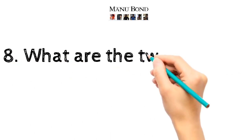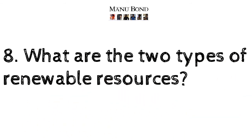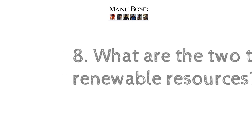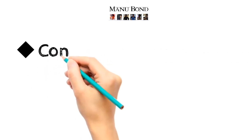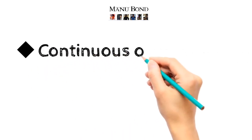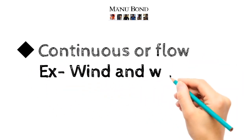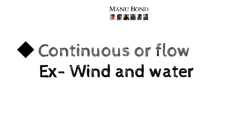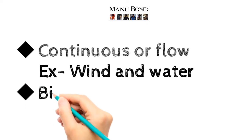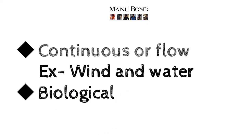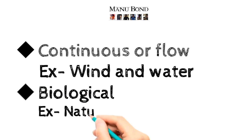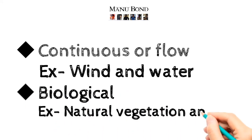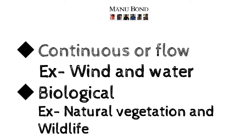Question number 8: What are the two types of renewable resources? Answer: Continuous or flow resources — example, wind and water. Biological resources — example, natural vegetation and wildlife.